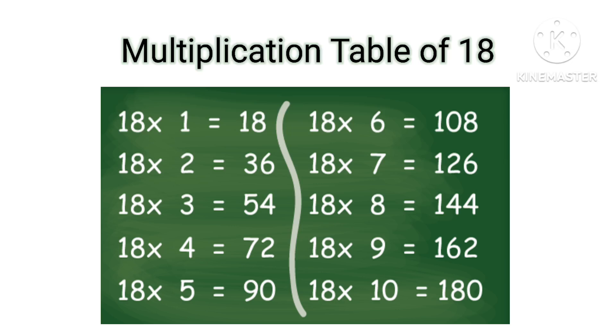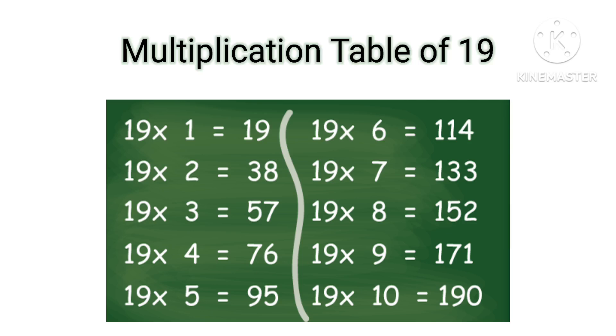Table of 18 (concluding): 18×9=162, 18×10=180.